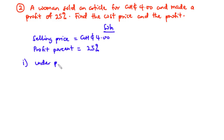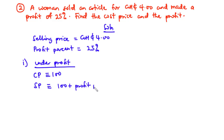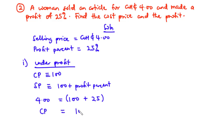Under profit, the cost price is equivalent to 100 and the selling price is equivalent to 100 plus the profit percent. Here, selling price = 4 Ghana cedis corresponds to 100 + 25 = 125. Using ratio and proportion, cost price = 4 × 100 / 125 = 3.20 Ghana cedis (3 cedis 20 pesewas).